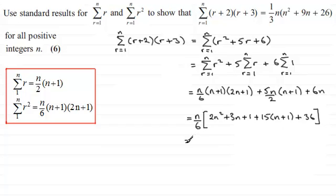And we've got n over 6 then, and I can see we've just got the 2n squared, the one n squared term there. And then we've got 3n here, another 15n there, so it's going to be plus 18n. And then 1 here, plus 15, 15 times the 1, plus the 36, that comes to 52.